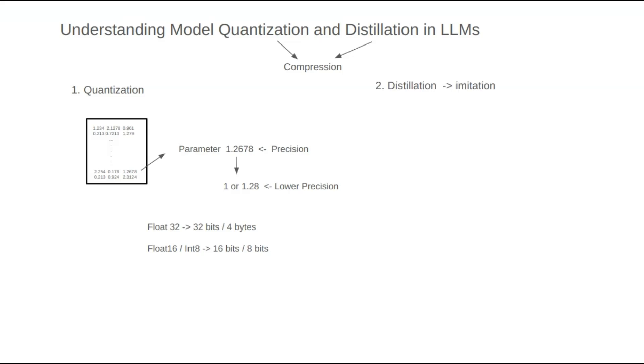Next, let's talk about distillation. Distillation is fundamentally different from quantization. Its essence lies in imitation. For example, suppose we've trained a very large model with hundreds of billions of parameters. This model is too large, so we want to compress it using distillation.